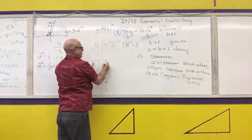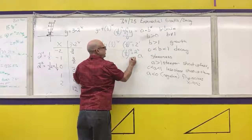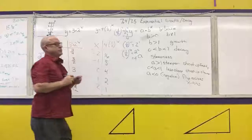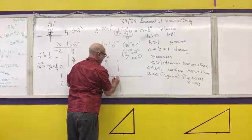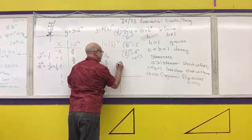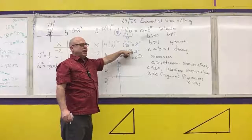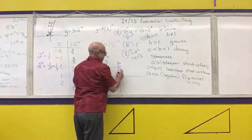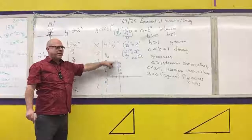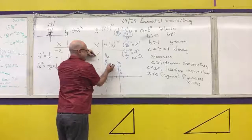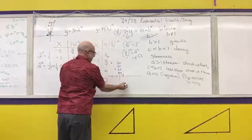One-half to the negative 2 equals 2 squared, which is 4. And 4 times 4 is 16. They're all doubling — the next one would be 32, then 64, then 128, then 256. Going by 4s on the tick marks vertically, by 1s horizontally: at negative 2, I have 16; at negative 1, I have 8; at 0, 4; at 1, 2; and at 2, 1.